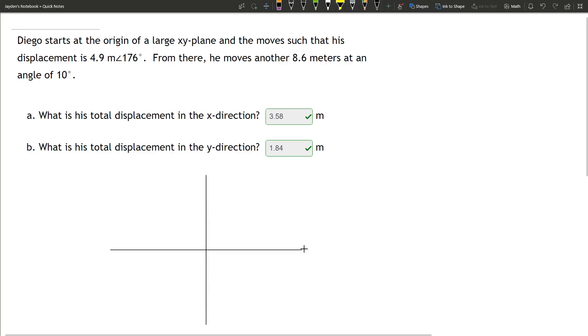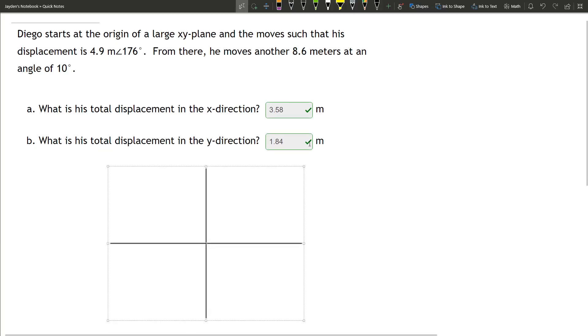Diego starts at the origin of a large XY plane and moves such that his displacement is 4.9 meters at 176 degrees. From there he moves another 8.6 meters at an angle of 10 degrees. We can break this into 2 vectors. We're given 2 vectors in polar form.